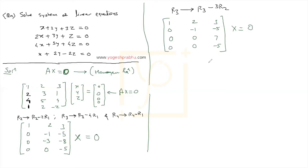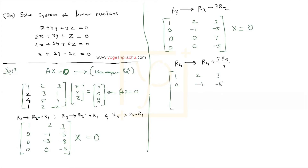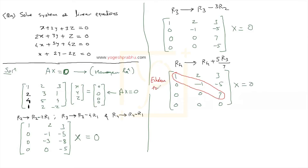We now need to make the remaining element in the fourth row zero. We perform R4 becomes R4 plus (5/7)·R3, using the pivot 7. This gives the last element as 0. The resulting row echelon form matrix is: row 1: 1, 2, 3; row 2: 0, minus 1, minus 5; row 3: 0, 0, 7; row 4: 0, 0, 0. All values below the diagonal are zero — this is the row echelon form.